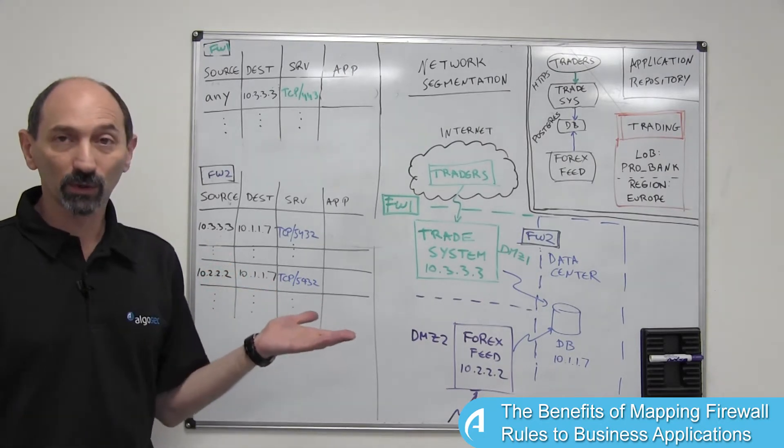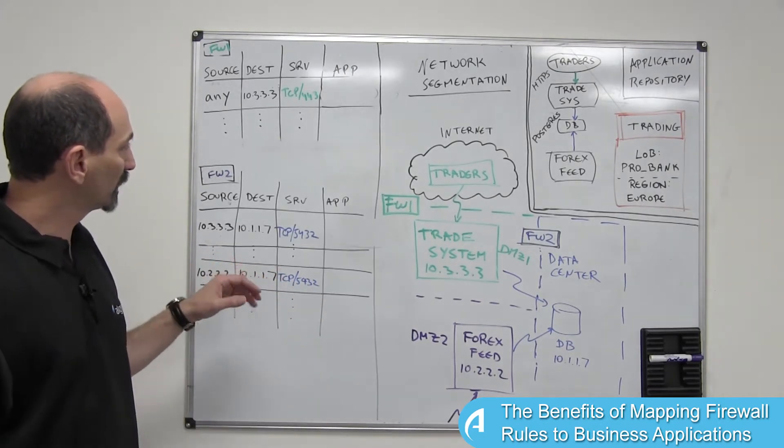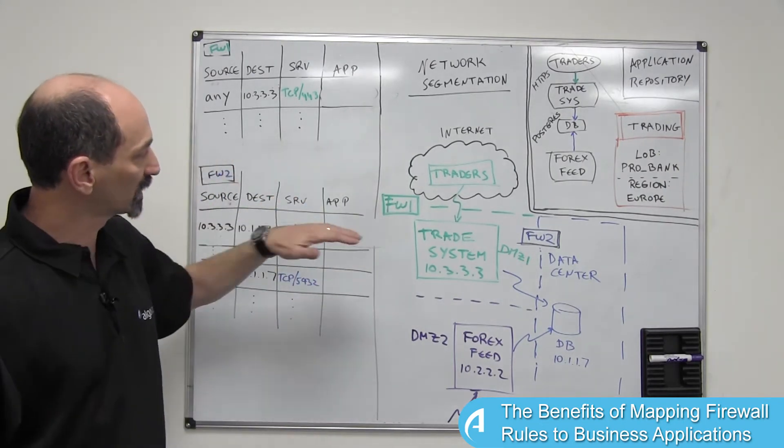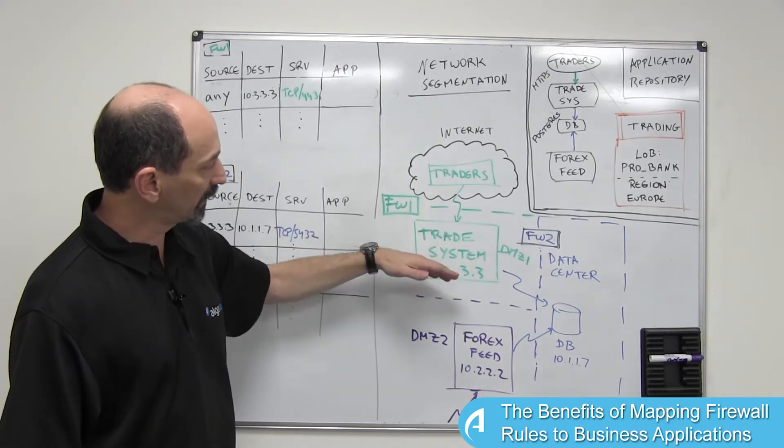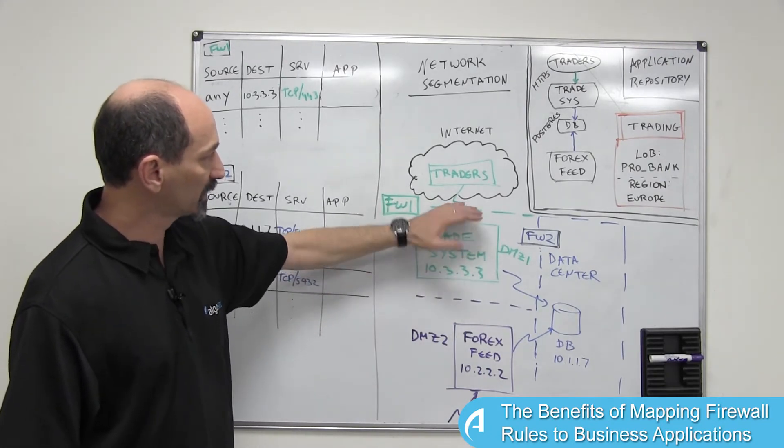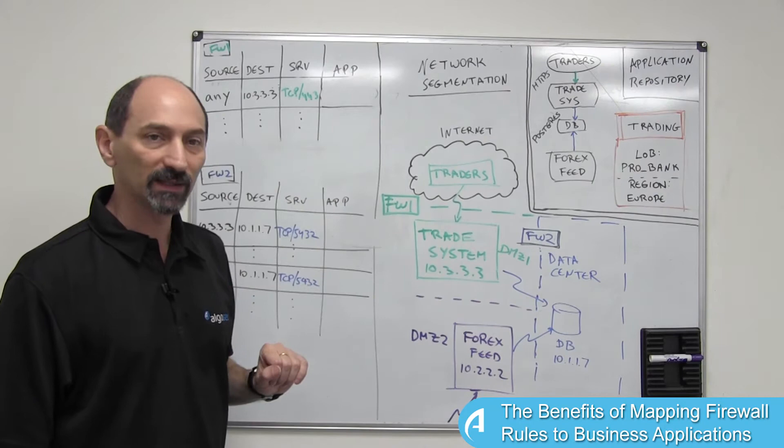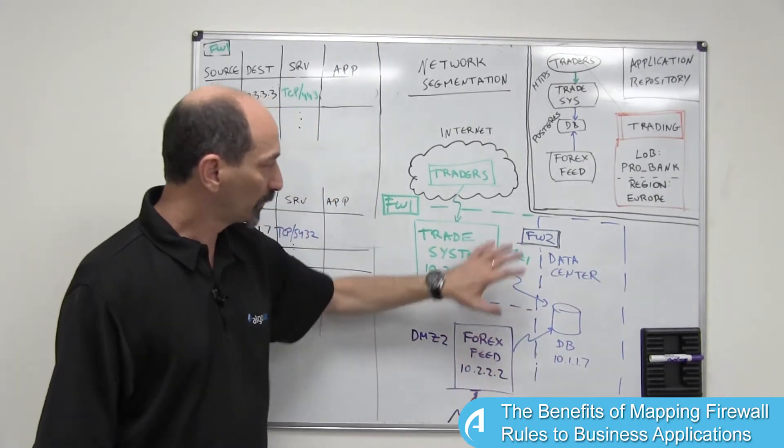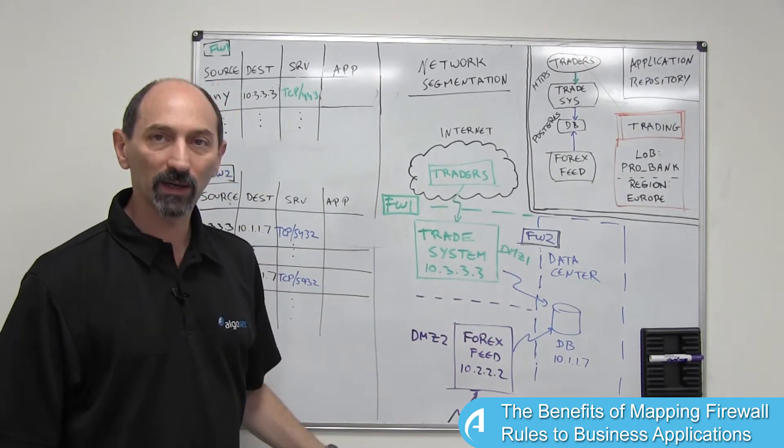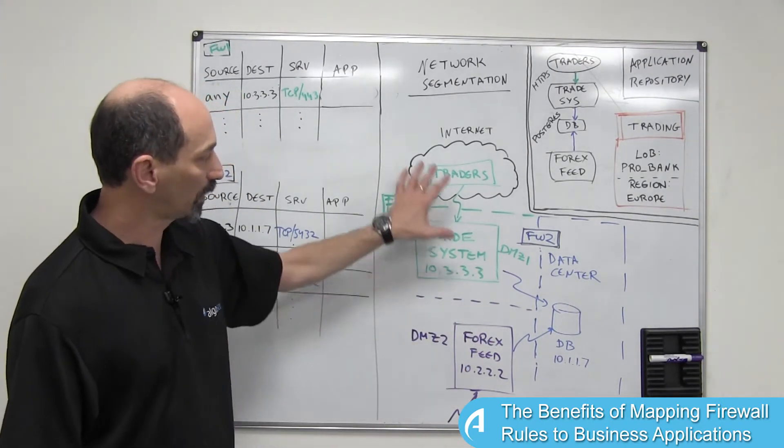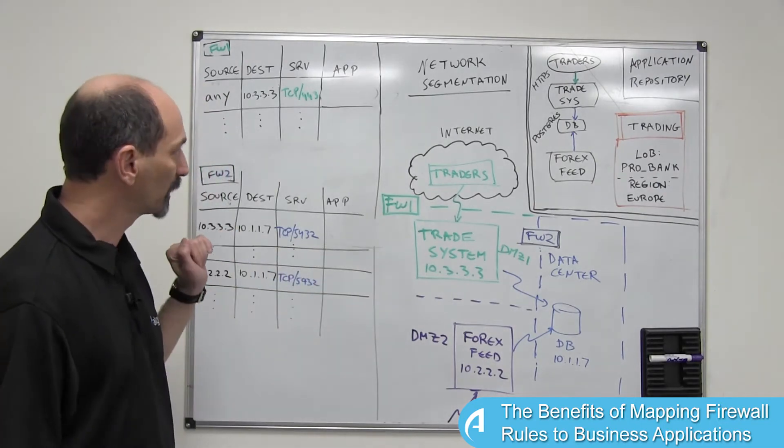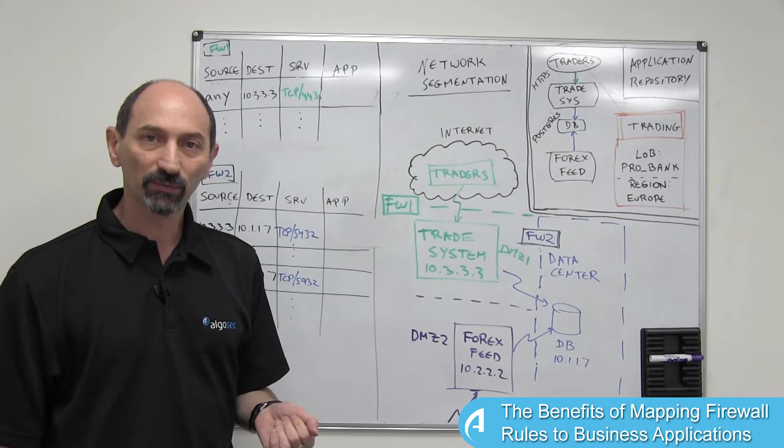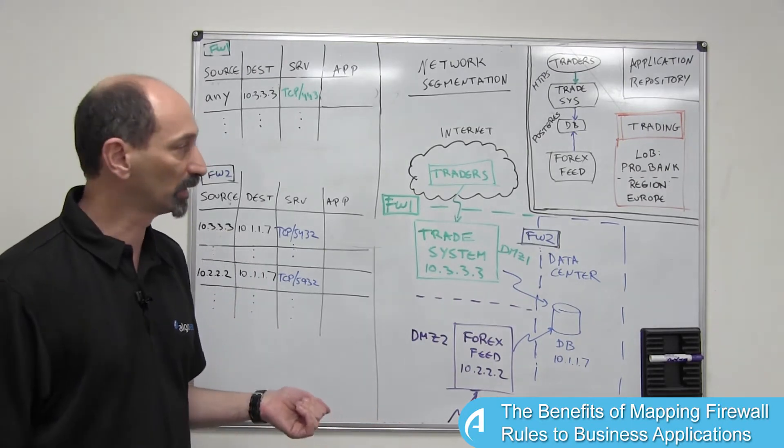And at this point you don't know too much. What you do know is some of the network segmentation. Possibly you know that the green firewall is actually the firewall protecting one of the DMZs from the outside internet and the blue firewall is protecting the data center and separating it from the various DMZs in the organization. So you are aware of the networking segmentation, but you still don't know what each of these rules is really for, why it's there, who put it there and maybe you can get rid of it.